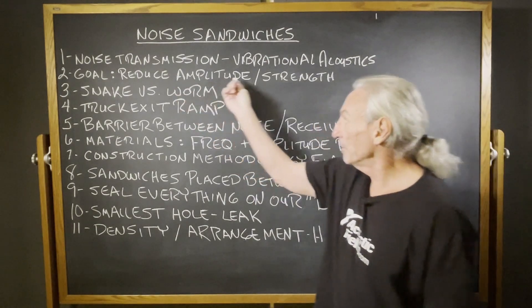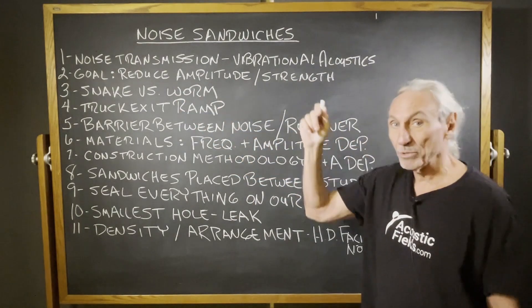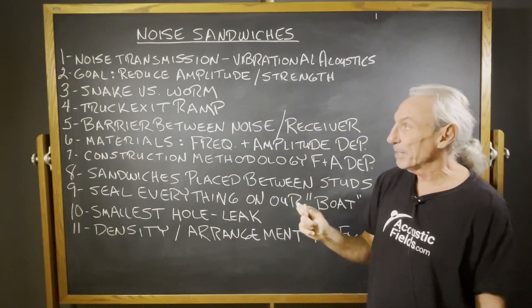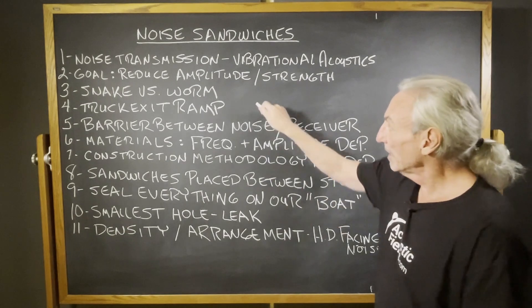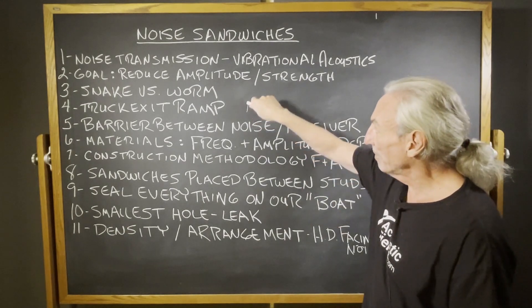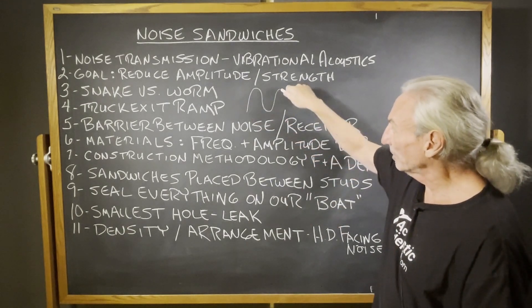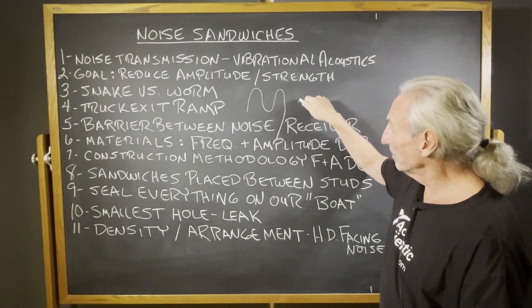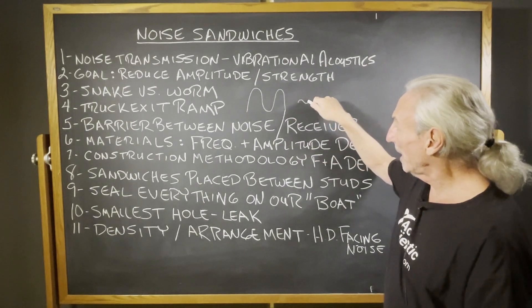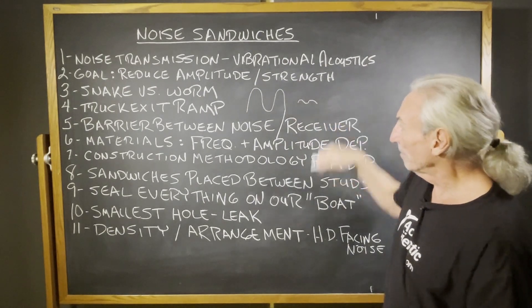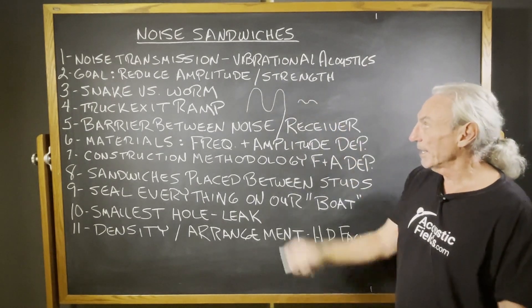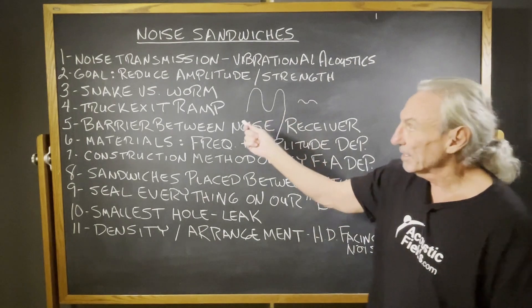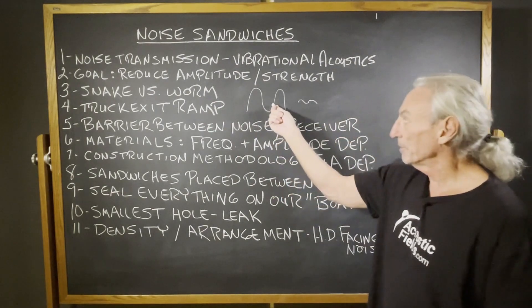Our goal is to reduce the amplitude, or the strength, of the vibration. So we have a vibration that hits our wall, and by the time it comes out the other side, we want to reduce the strength — snake versus worm.